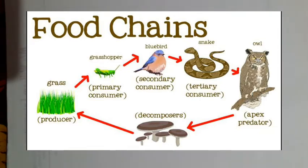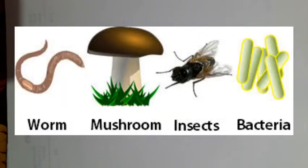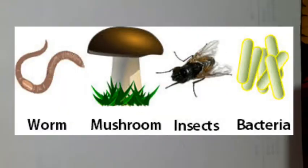The omnivores are nothing but the human beings. As they are mixed, they can eat the producers as well as the animals also, so they are omnivores and they come in between the primary and the secondary consumers. We have also studied about the decomposers, which are nothing but the bacteria and various other microbes.